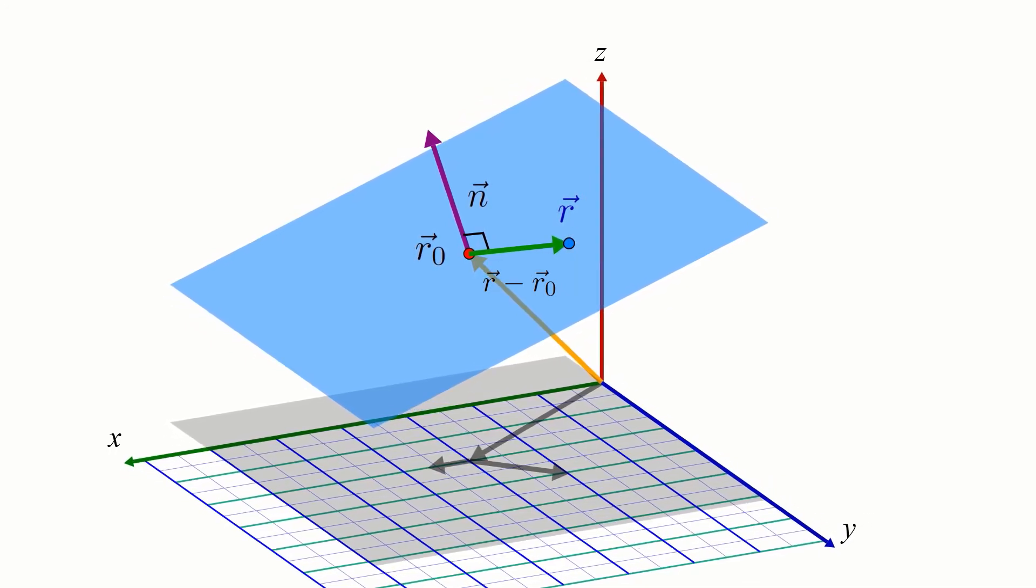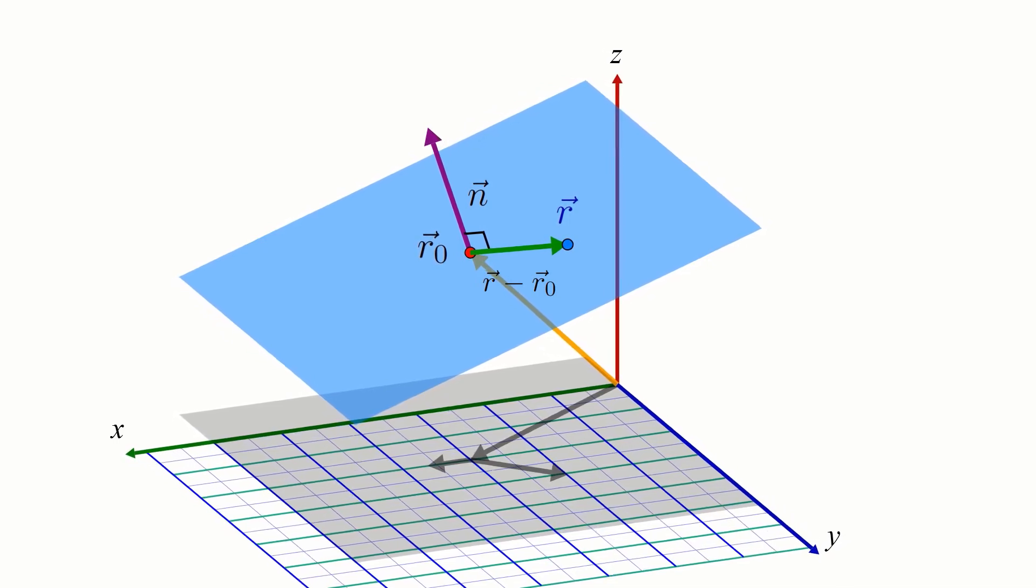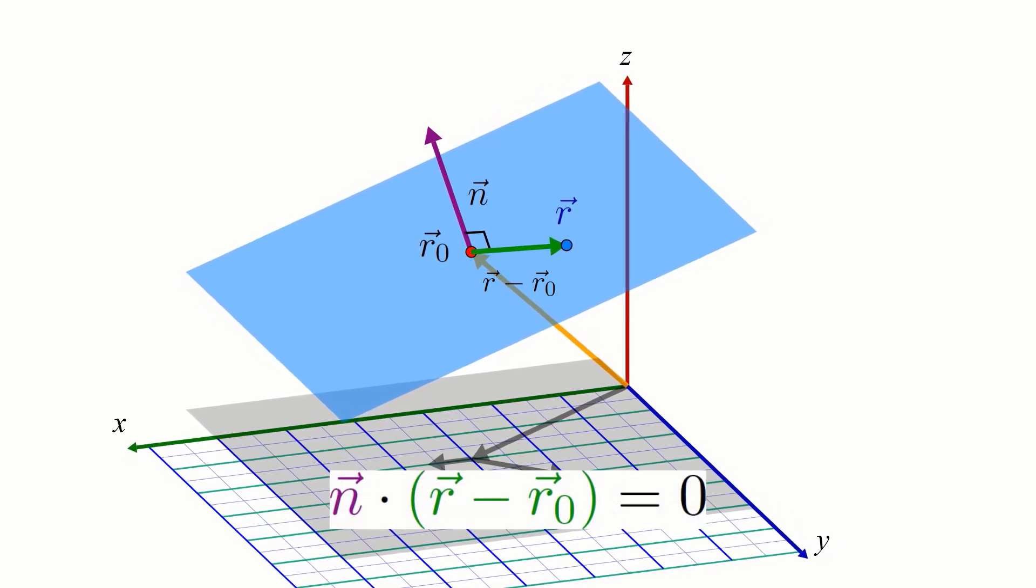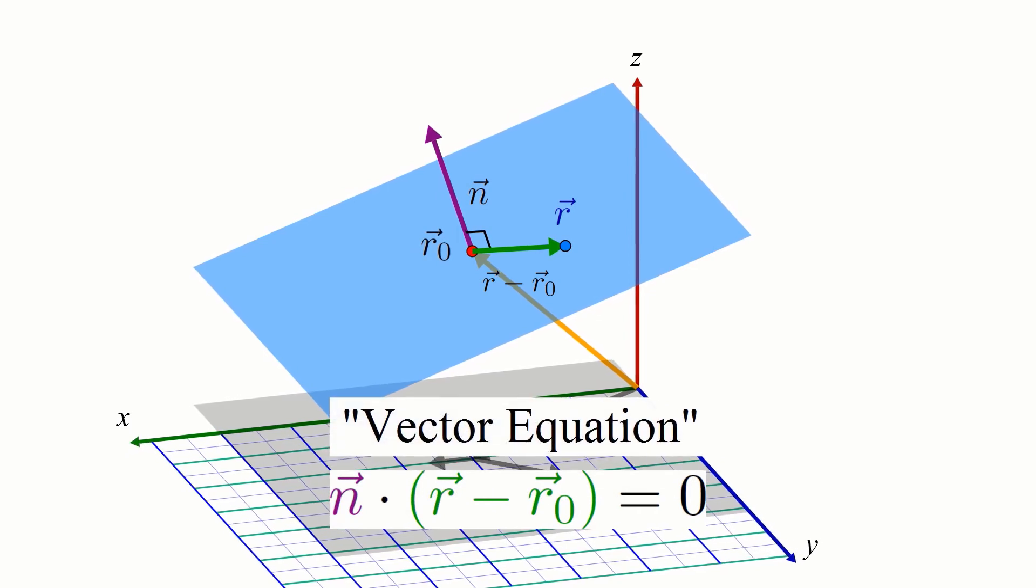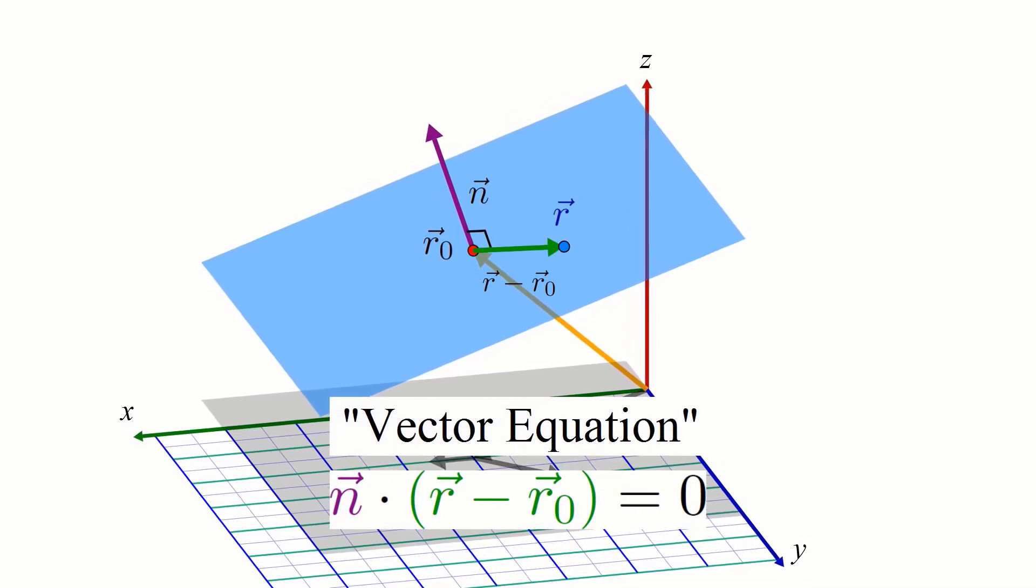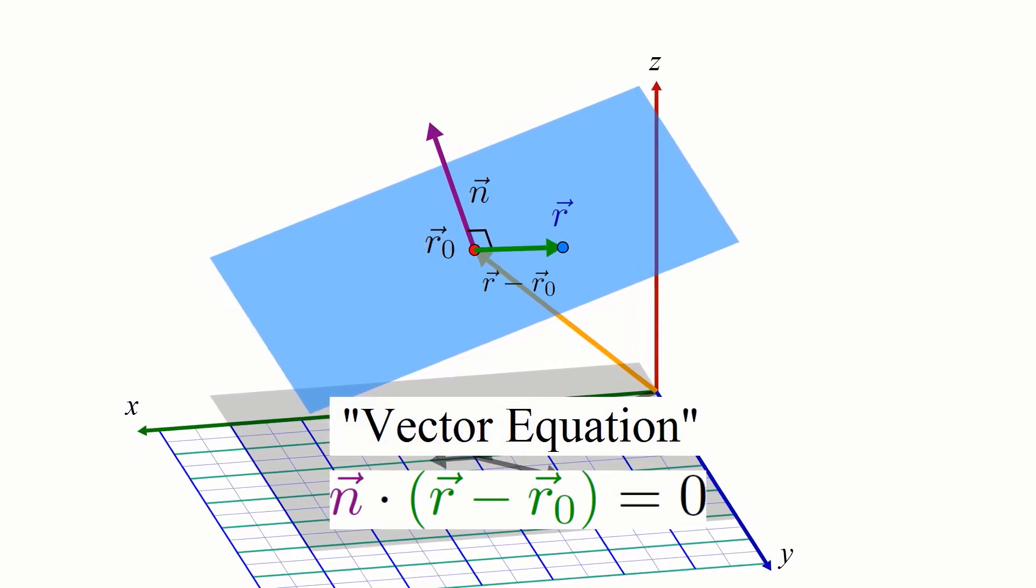But we have a way to algebraically indicate that two vectors are perpendicular. It means their dot product is zero. And that gives us the vector equation of a plane. n dot r minus r0 is equal to zero.